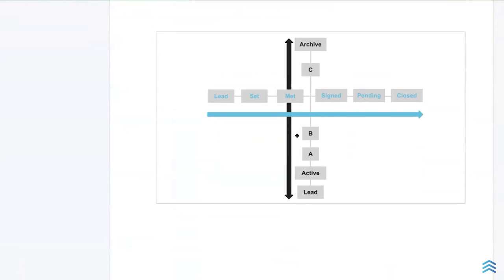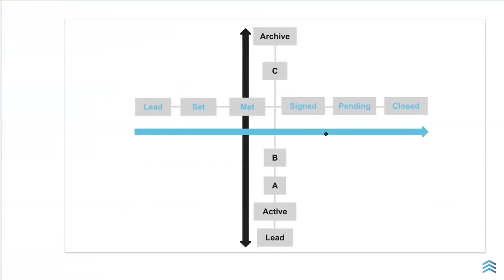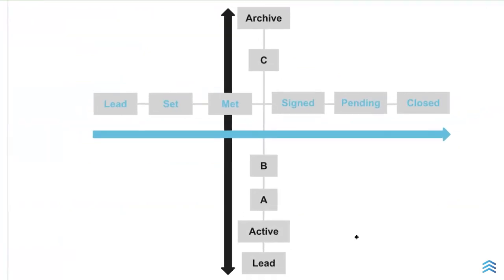I drew this graphic for my sales team and it was the clicking moment for everyone. You see the directional arrow: lead, set, met, signed, pending, closed — that's one direction only. Both start as a lead, but the communication stage journey goes up and down the scale, sliding left and right. The deal stage journey is always forward. The only time a deal goes backward is if a pending falls out and you need to find them another property.